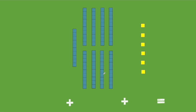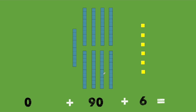How many blocks do you see here? Do you see any in the hundreds place? No. How about in the tens place? 9, so 90. How about in the ones place? 6. So our total should be 96.